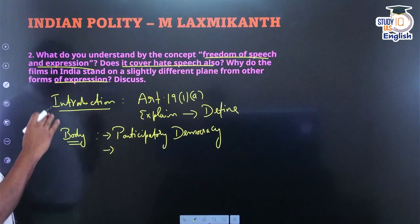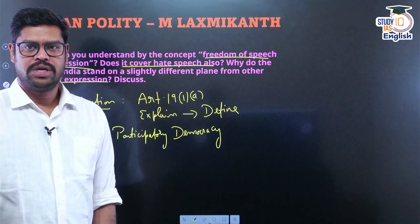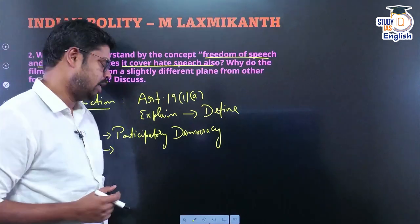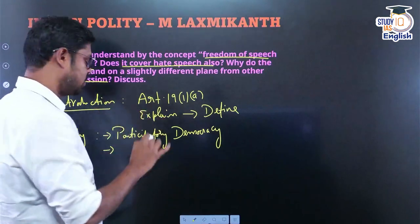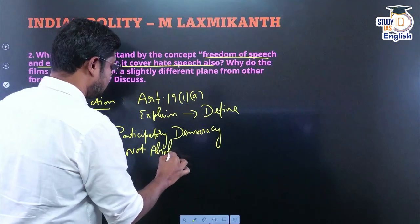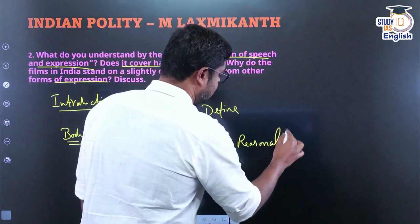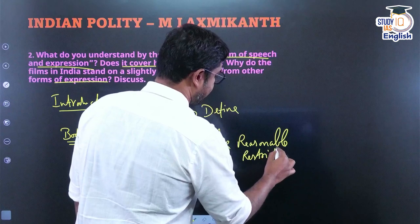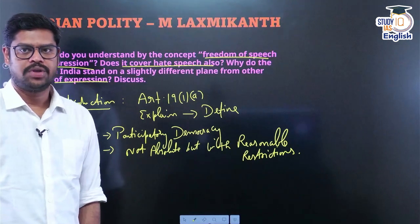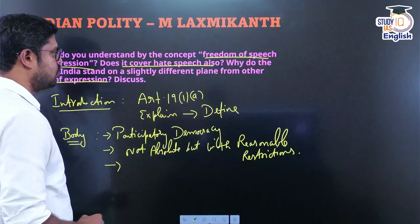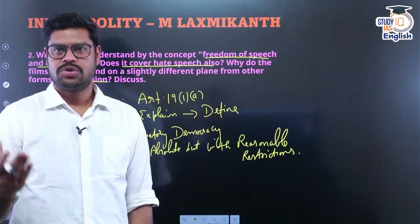Now transitioning to the second part — does it cover hate speech? You need continuity in what you write. After explaining the right, you can say: however, the right to freedom of speech and expression is not absolute — it comes with reasonable restrictions. This is very important: make the examiner understand it is not absolute but can be exercised with reasonable restrictions. Hate speech is one such reasonable restriction.